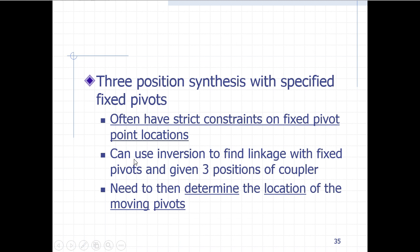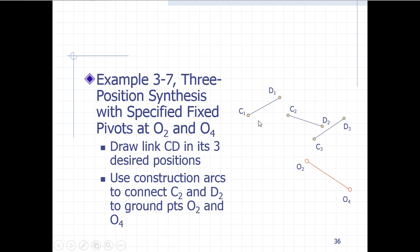The way we handle this is by using inversion, which simply means grounding a different link in the kinematic chain. We start with the coupler positions C1D1, C2D2, and C3D3 — the link must move through these three positions. But this time O2 and O4 are specified as our required ground positions. We draw link CD in its three positions and use construction arcs to connect C2D2 down to the ground points O2 and O4, as we will see on the next slide.